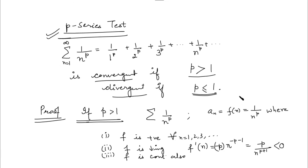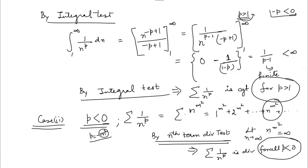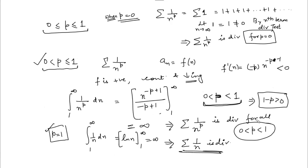So for P greater than 1, by the integral test the value is finite, so the series is convergent. For all other cases — by the nth term divergence test or the integral test — the value of the integral is infinite or the nth term does not go to 0, so in each case the series is divergent.